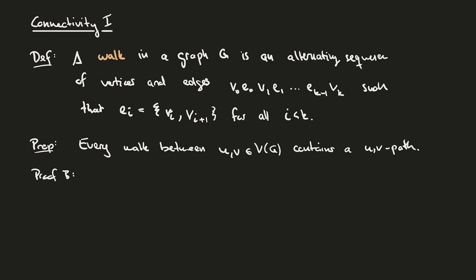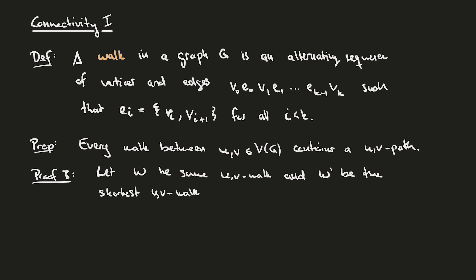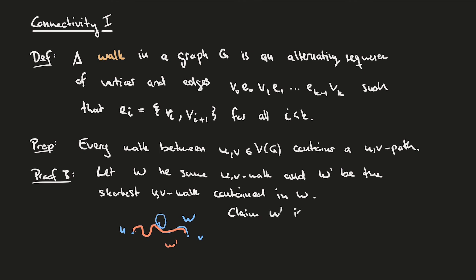The second proof uses extremality, and because of this it's a little shorter than the inductive proof. However, it uses exactly the same idea from the inductive step. Let w be some u-v walk, and let w prime be the shortest u-v walk contained in w. We now claim that w prime is a u-v path. If w prime does not intersect itself — no repeated vertices — then w prime is already a path, and we're done.